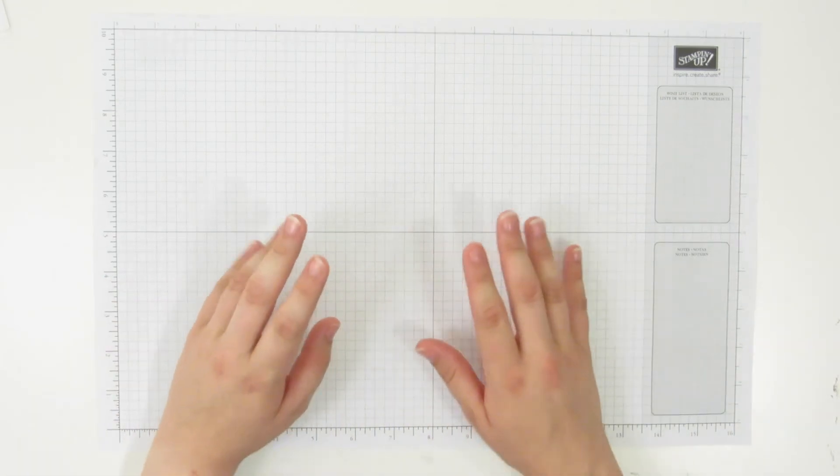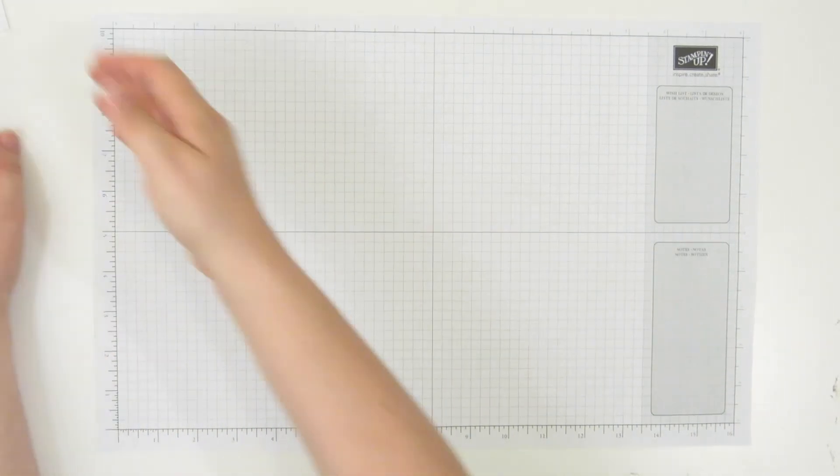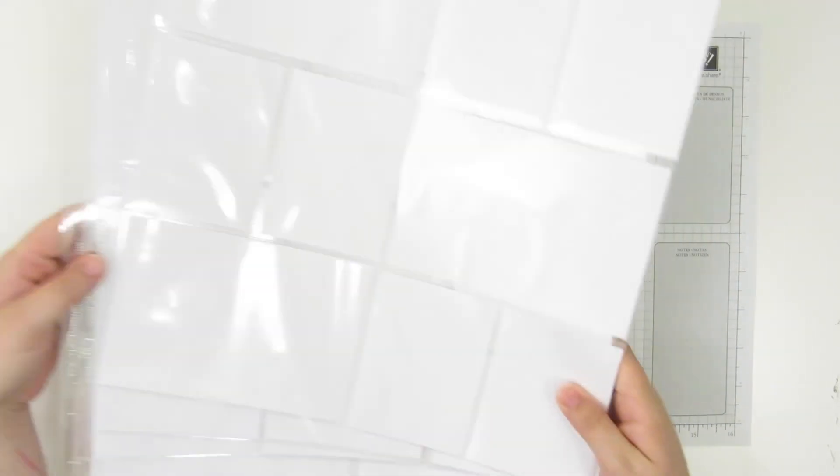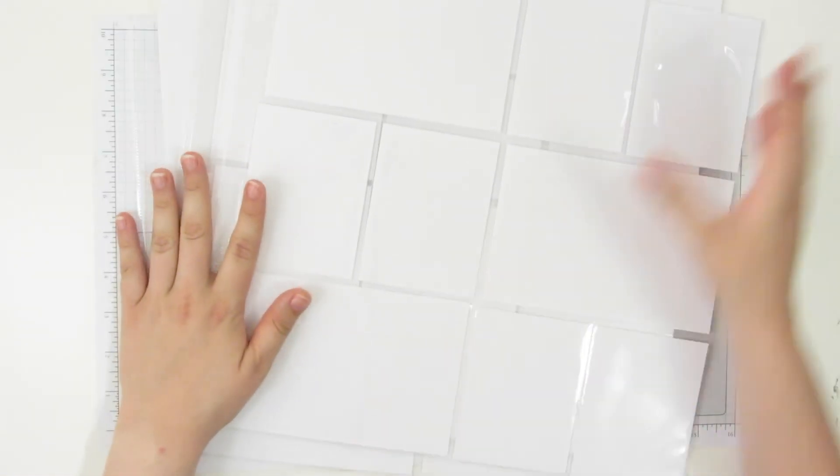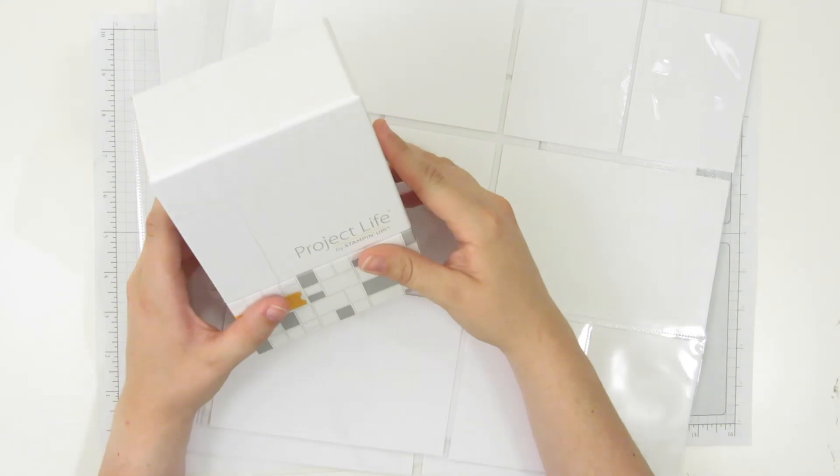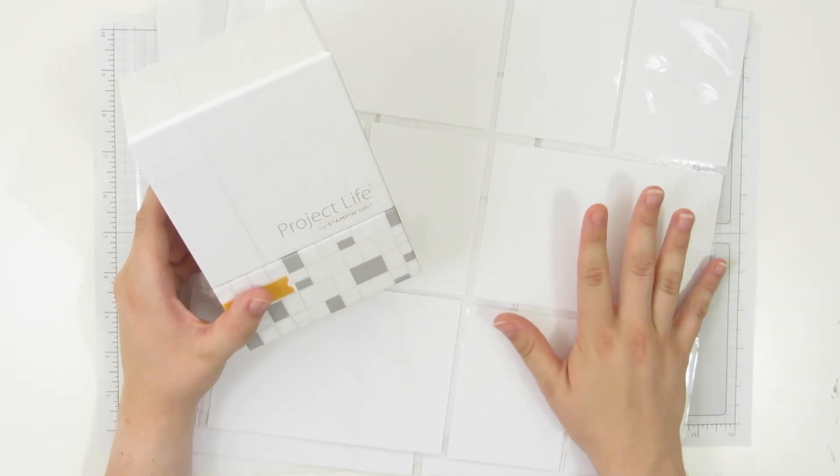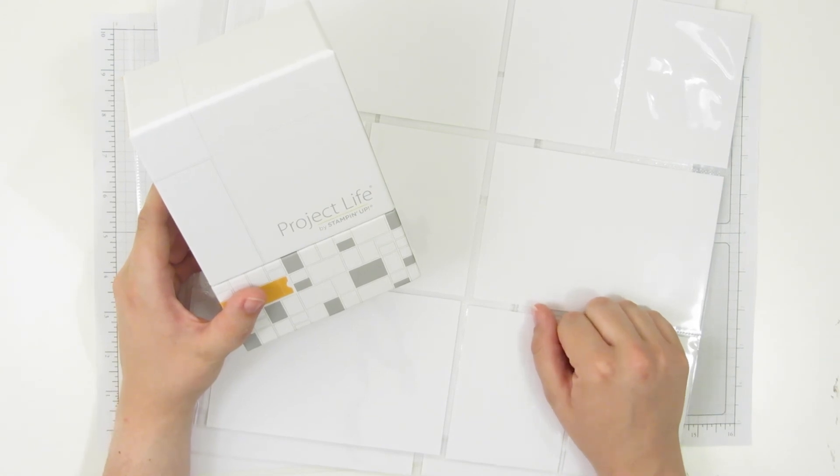So again, for the Project Life by Stampin' Up 30-Day Challenge, you're going to be buying a pack of the Divided Pages and a card collection, which will come to $35 with taxes and shipping and everything. And you'll be ready to start and have a chance to win some great prizes and get all your photos into an album.